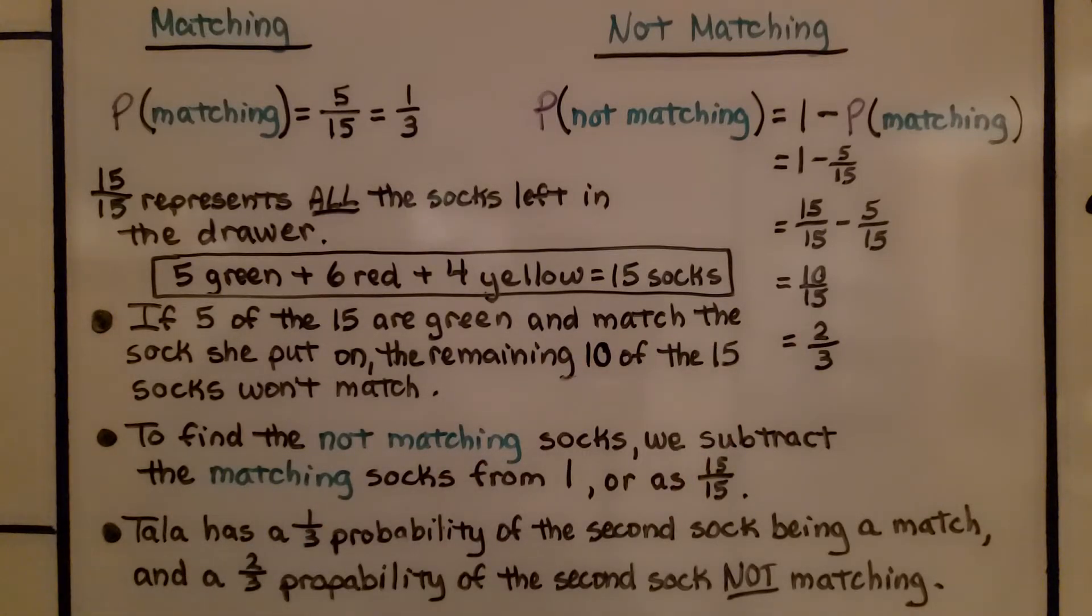To find the not matching socks, we subtract the matching socks from one, or as 15-fifteenths. Tala has one third probability of the second sock being a match and two thirds probability of the second sock not matching.